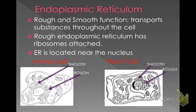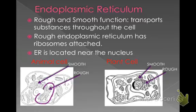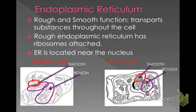The next organelle is called the endoplasmic reticulum — we call it ER for short. There's a rough and smooth endoplasmic reticulum, but they both do the same thing: it is our transportation system, like the subway in your cell. It transports materials and substances through the cell to where they need to go. The rough endoplasmic reticulum is called rough because it has ribosomes attached. The smooth endoplasmic reticulum does not have ribosomes attached — that is the only difference.